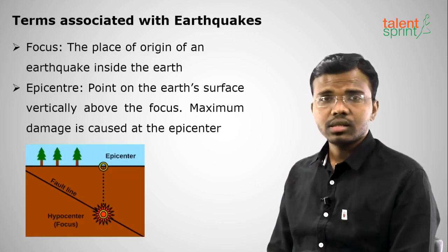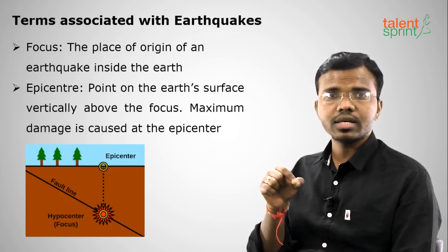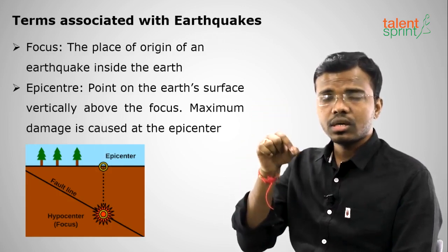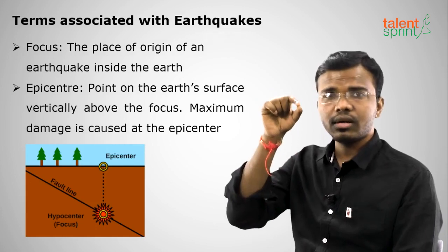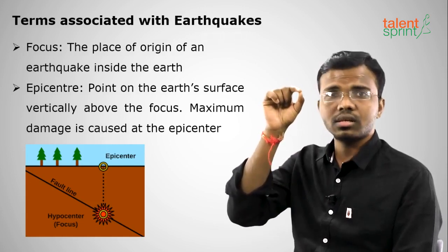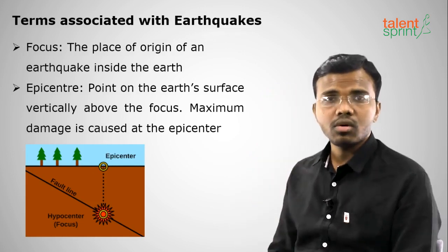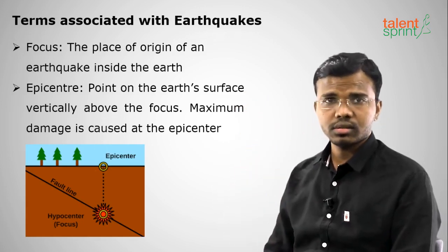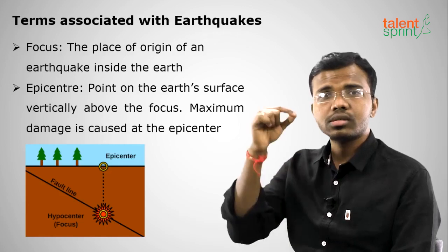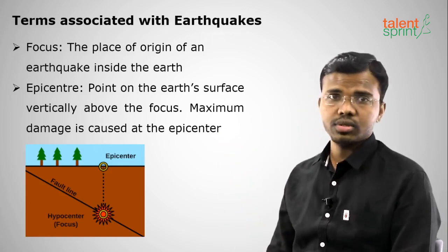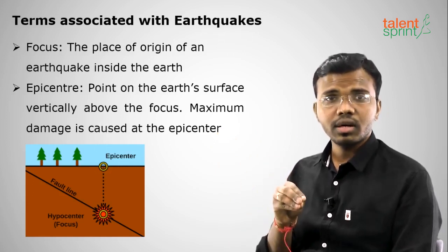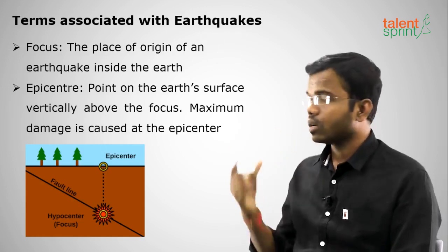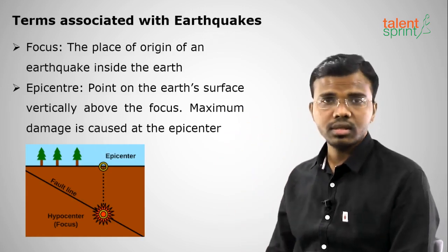What do you mean by epicenter? The focus is where the earthquake has originated. All the body waves will travel in all directions, but the wave covering the shortest distance to the surface will reach a point on the surface first. That point is called the epicenter. The epicenter is directly above the focus — it is the shortest distance from the focus to the surface of the earth. Focus is also called hypocenter. The first point which gets the destruction, having the shortest distance from the focus, is the epicenter on the surface.